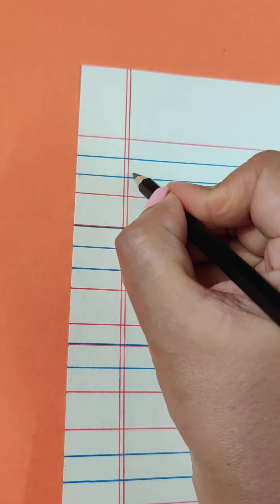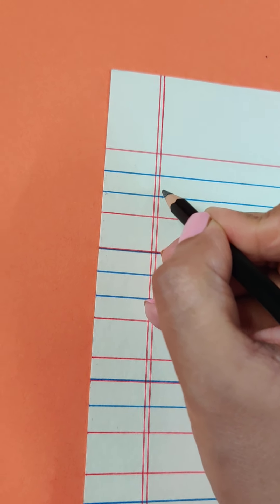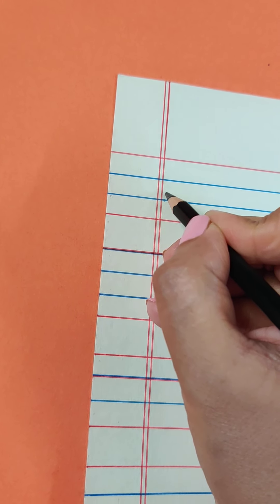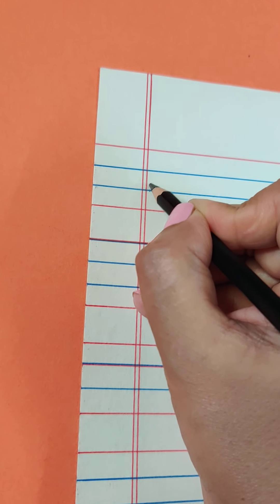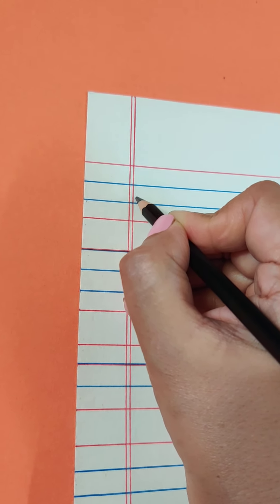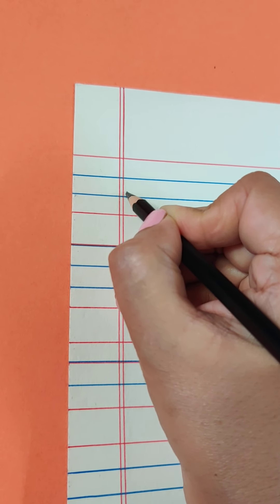So letter M will start above the second blue line. Can you see? Not from the blue line, above the second blue line. And as we made the starting stroke of A, in the same way we will make a curve, come down.